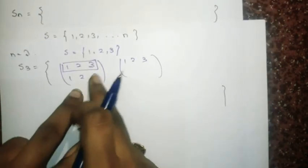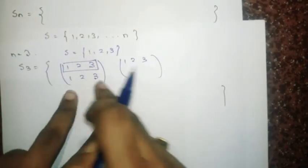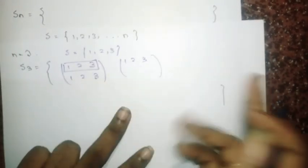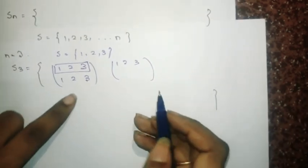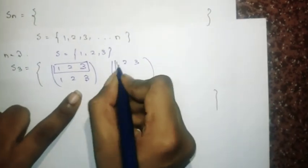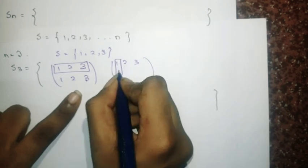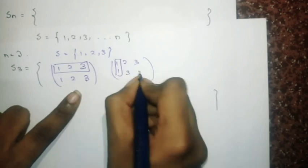I'm not going to write this identity permutation again. All these are unique permutations. To maintain unique permutations, I'll go in order: 1 is mapped to 1, and I'll change these to 3 and 2.